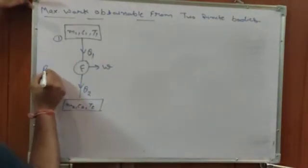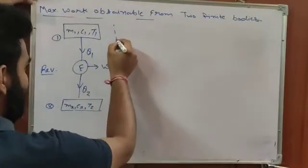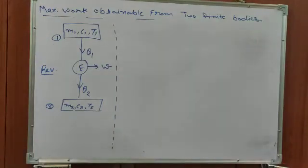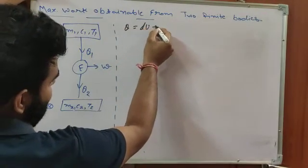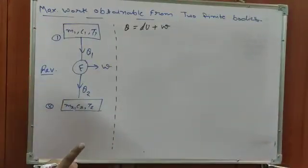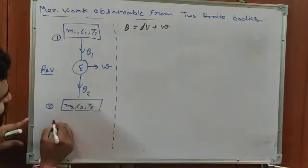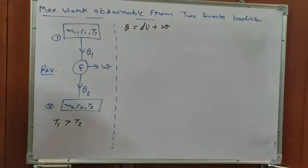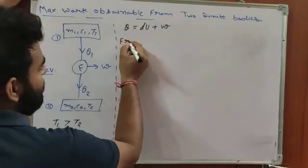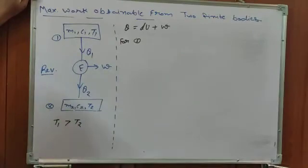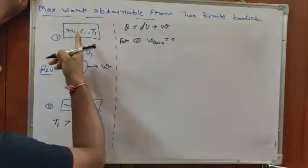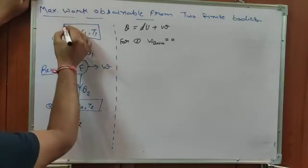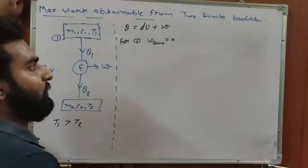This engine is reversible. From the first law of thermodynamics we can write Q equals dU plus W. Here we have two bodies — one having temperature T1 and one having temperature T2 — let's suppose T1 is greater than T2. For body 1, this is our system. The boundary work for system 1 is zero — there is no boundary work from the system.